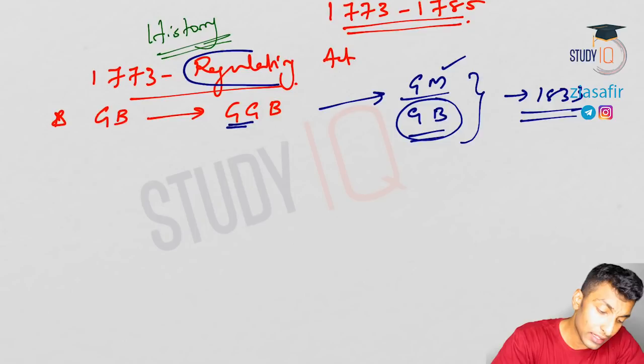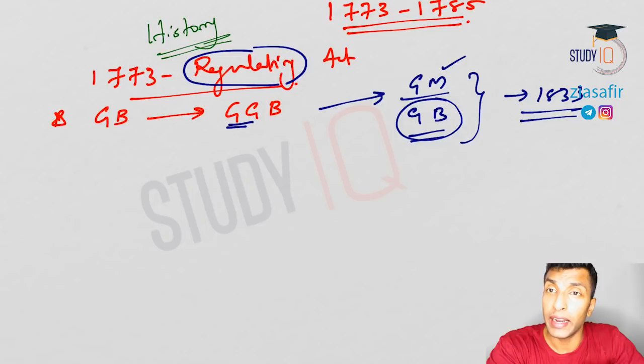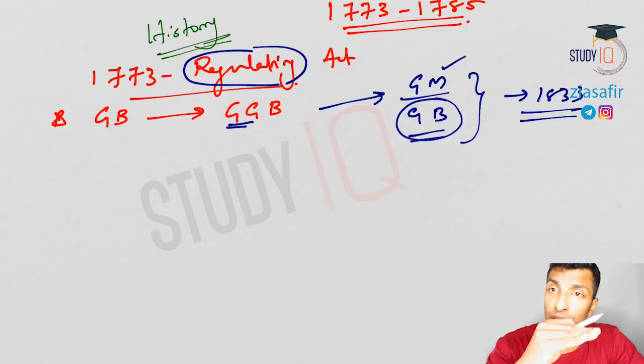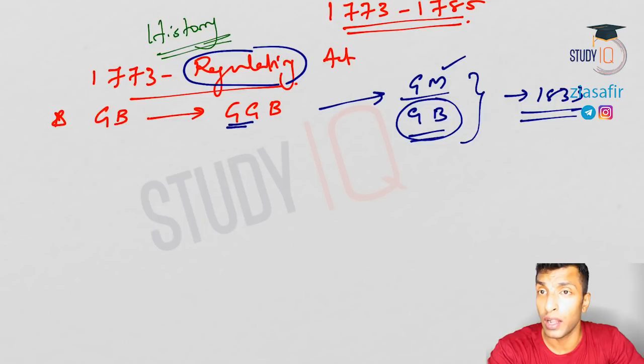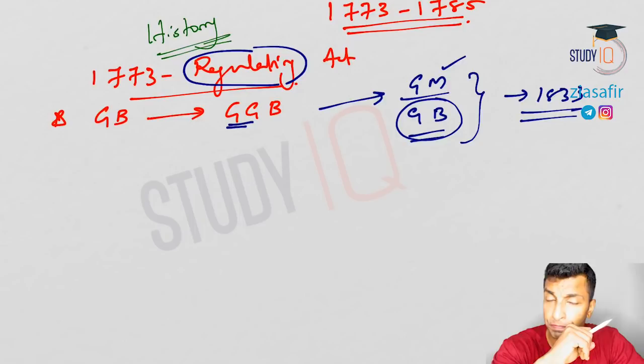The act is called the Regulating Act because it is the British Parliament regulating the East India Company's affairs in India. The regulation kept increasing — more in Pitt's India Act, then in 1813, 1833, and by 1857 the Parliament took complete control of India from the Company, with the British Crown directly ruling India.